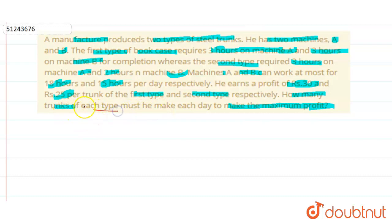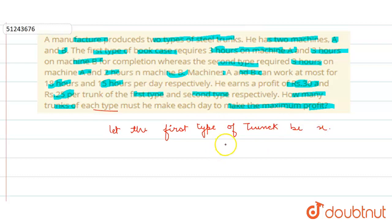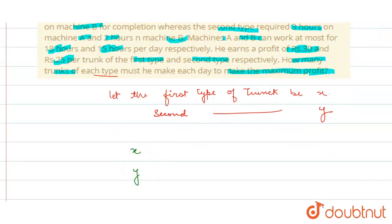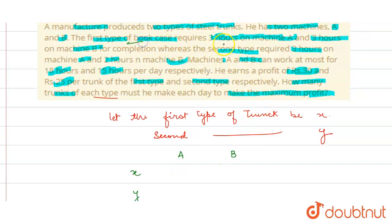How many trunks of each type must he make? So let's define our variables. Let the first type of trunk be X and the second type of trunk be Y. The first type requires 3 hours on machine A and 3 hours on machine B. The second type is 3 hours on machine A and 2 hours on machine B.